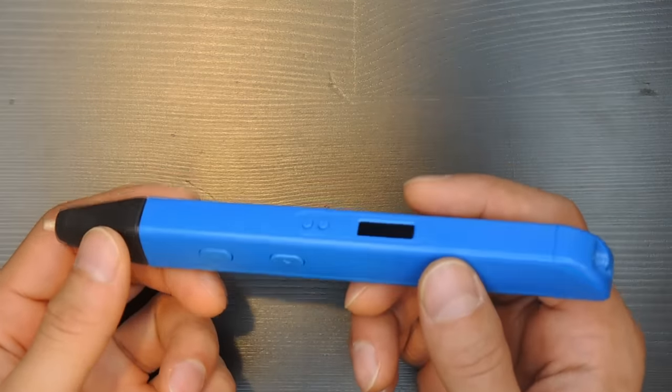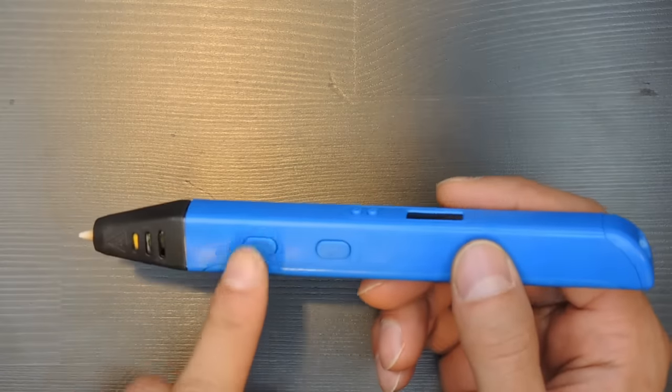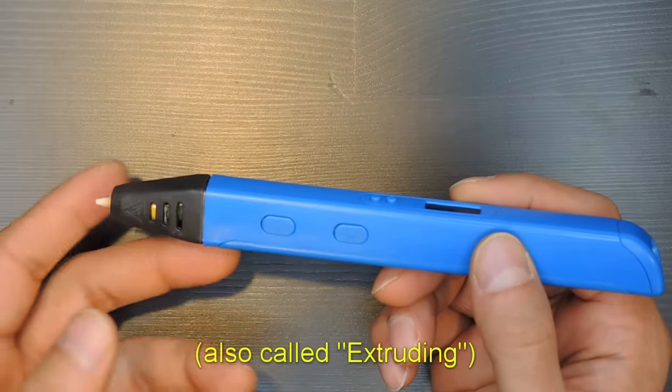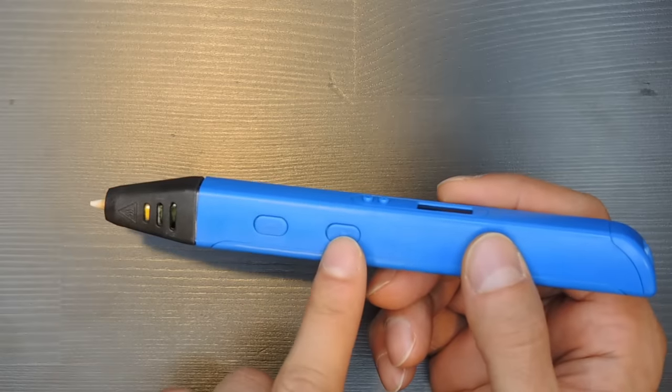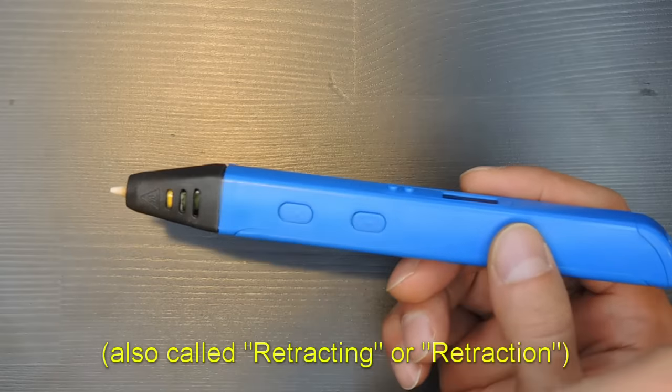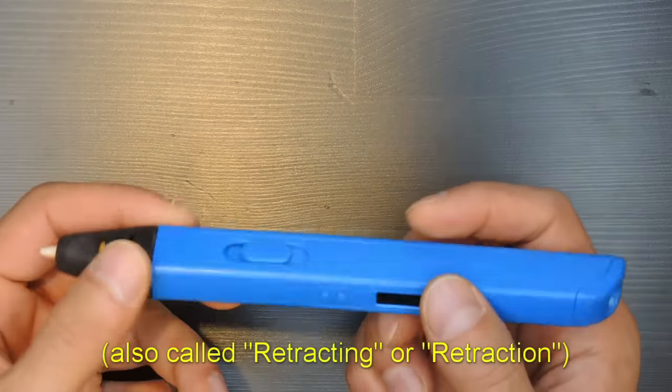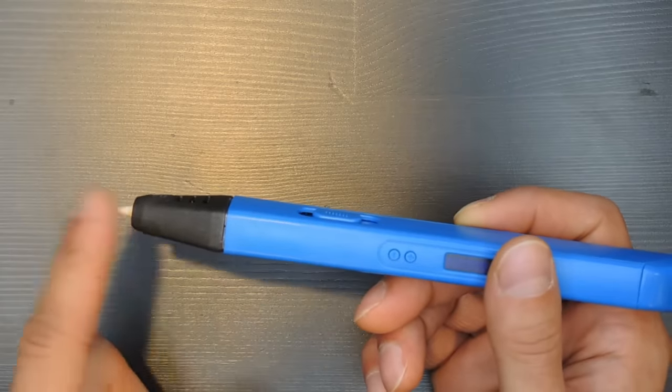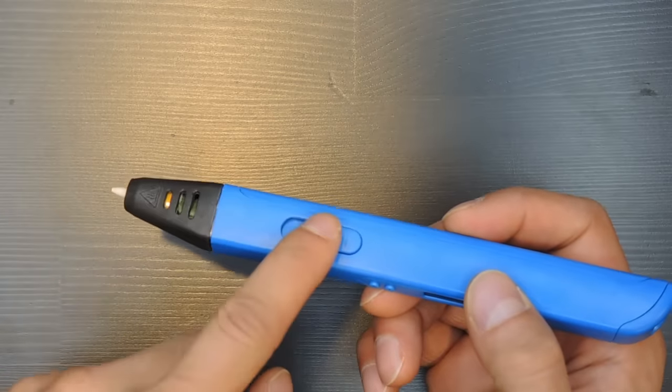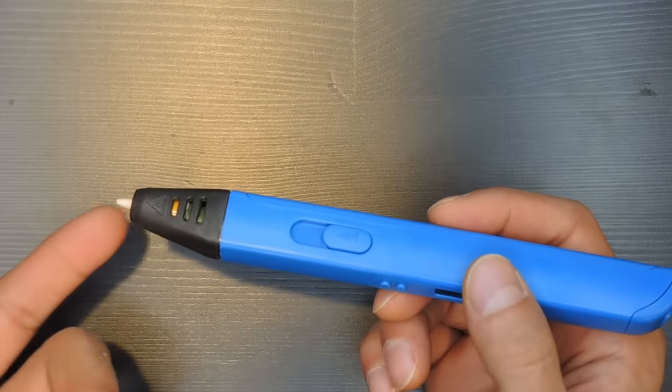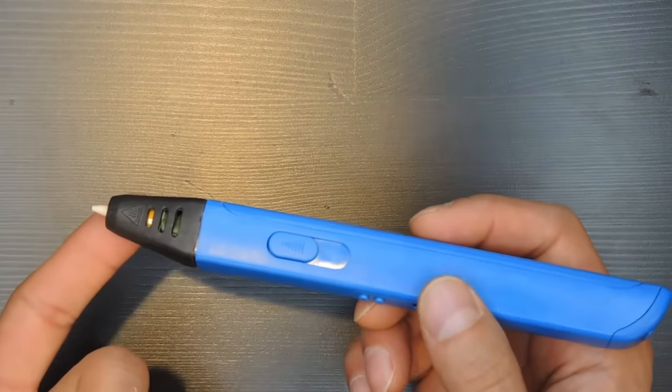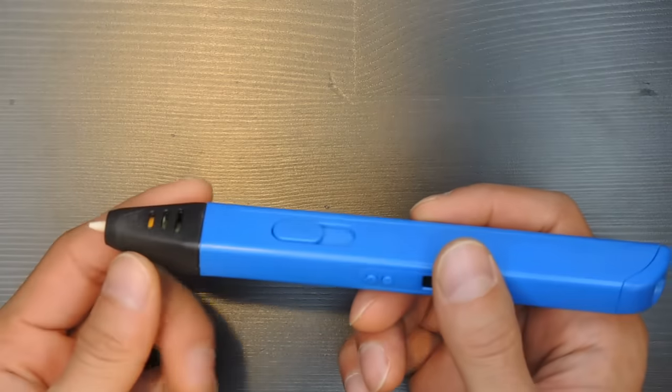There are typically three important buttons on a pen. One for moving the filament forward, when you want to push out some plastic and do some penning. One for when you want to move the filament backwards, or unload the pen. And finally, there's a speed control, which allows you to set how fast the plastic will come out of your pen. The fast setting will allow you to easily make thick, chunky lines, while the slow setting will allow you to make thinner, more detailed, oriented lines.